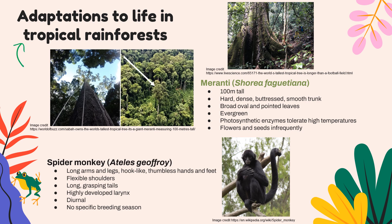In tropical rainforests, we'll look at the Maranti tree. It's super tall, which allows it to compete for sunlight. However, being very tall brings challenges — wind is more likely to knock it down, and the taller and heavier you are, the more likely you are to fall. To combat this, the Maranti has really hard and dense wood with lots of lignin in its xylem, and it's buttressed — extra layers around the trunk help hold it up and stabilize its height.